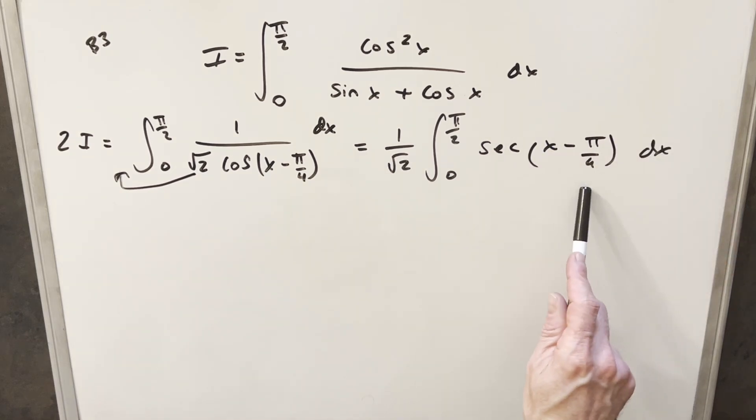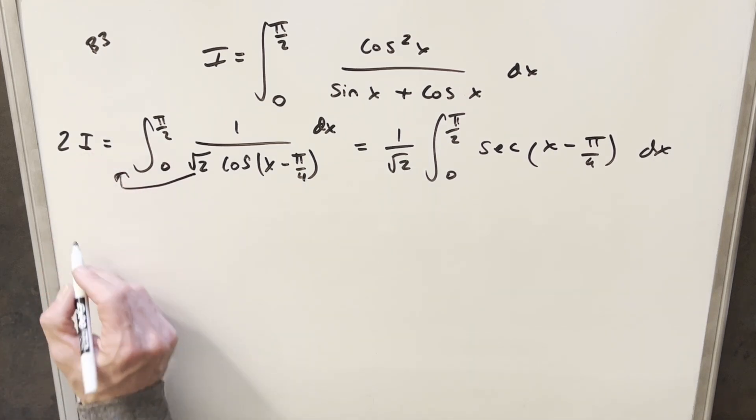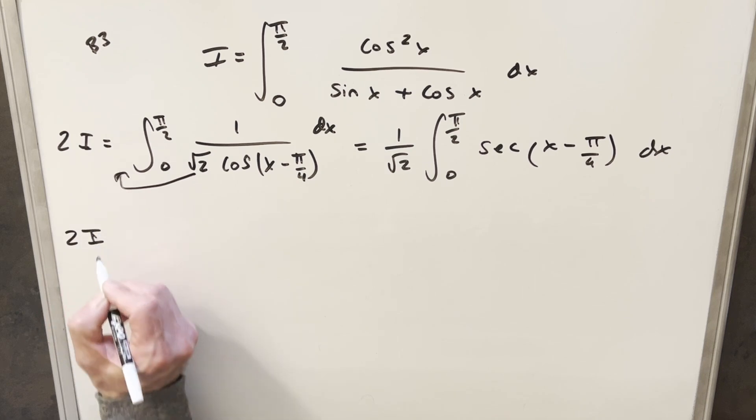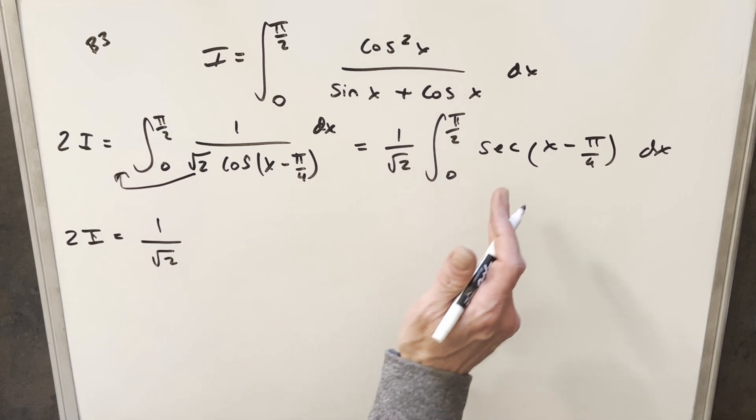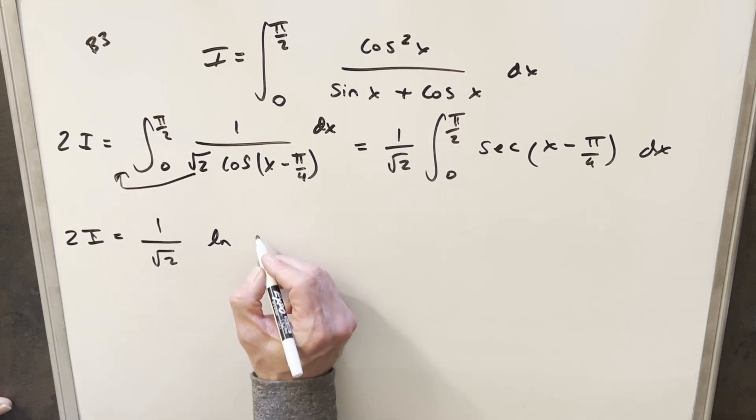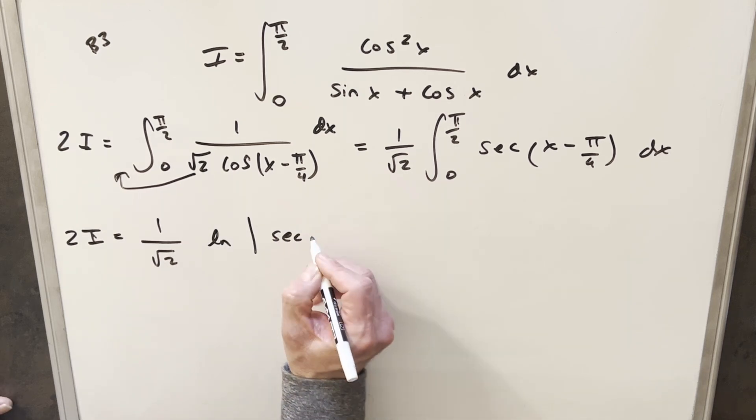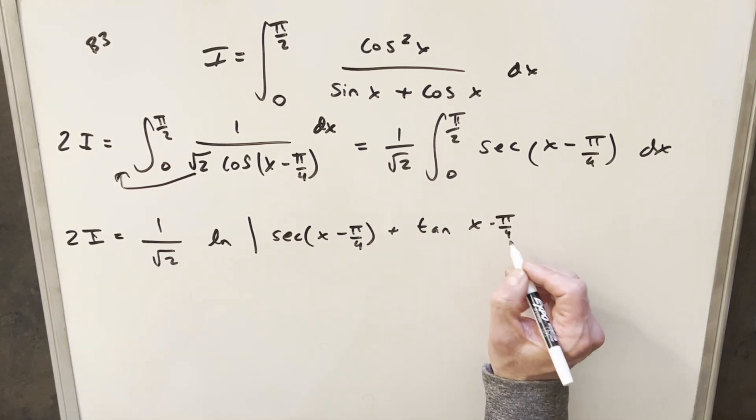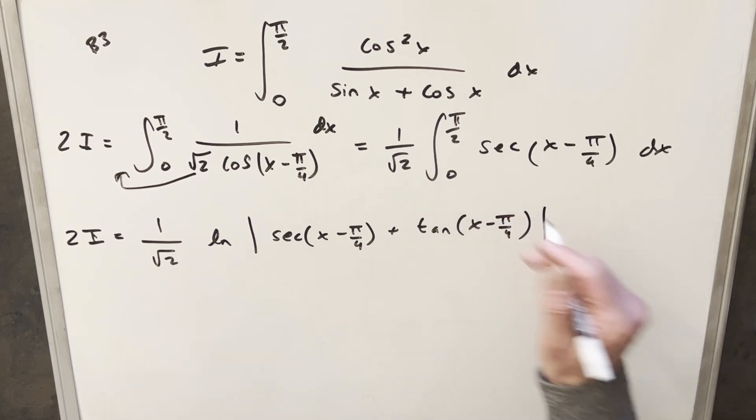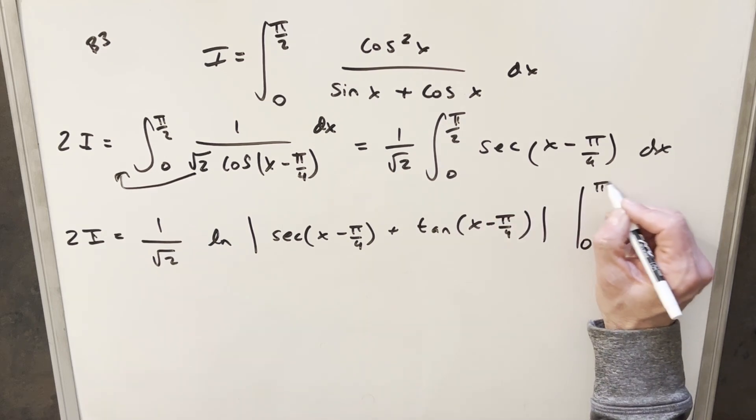Now, you could do another substitution here, but it's really unnecessary because the derivative of this is just 1, so it won't do anything. So let's just go ahead and integrate. Let's not forget that this is still 2 copies we're dealing with here. So we have 2I. We'll have our 1 over square root of 2 in front. The integral of this is going to be natural log, absolute value, secant of our input, plus tangent of the same thing, just using the formula. And then we still want to evaluate this from 0 to π/2.